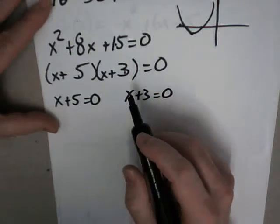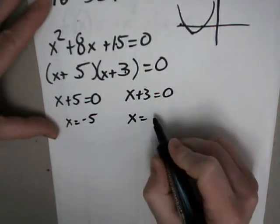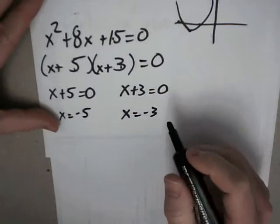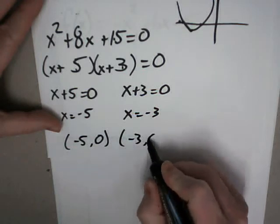Basically you take both of those factors and simply set it to 0. So x equals negative 5, x equals negative 3. So my x-intercepts are negative 5, 0, negative 3, 0.